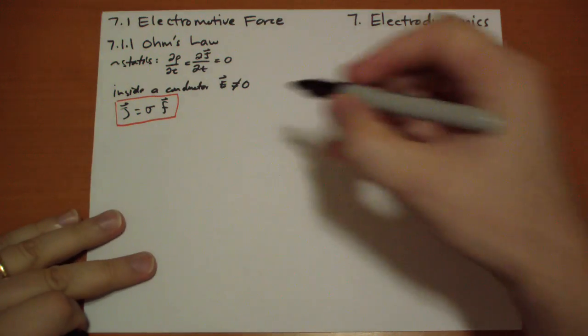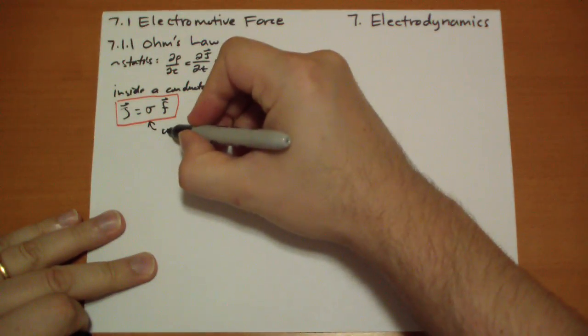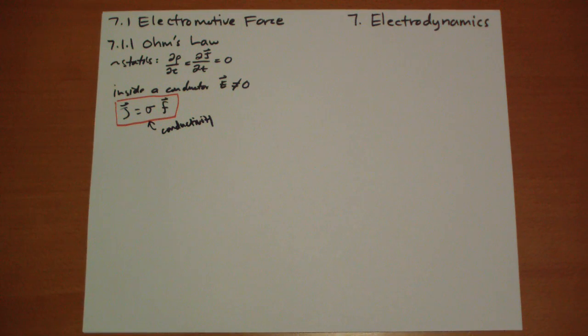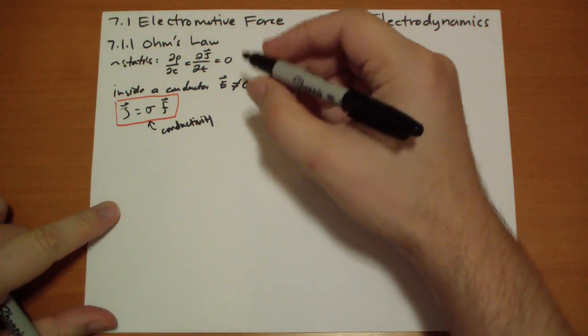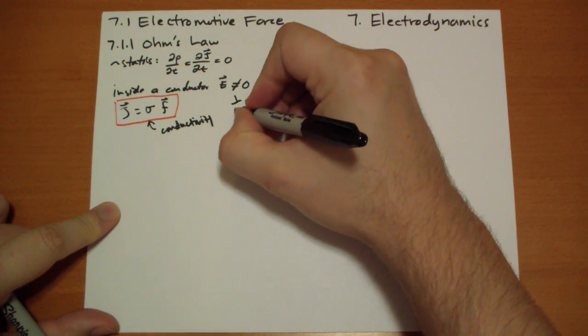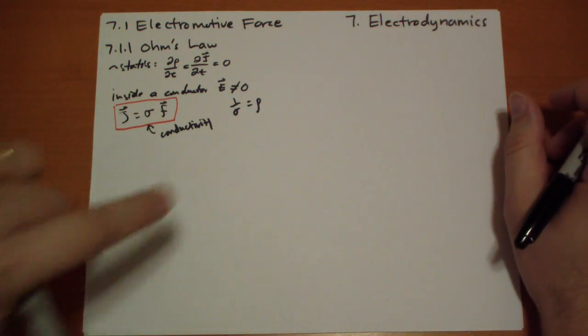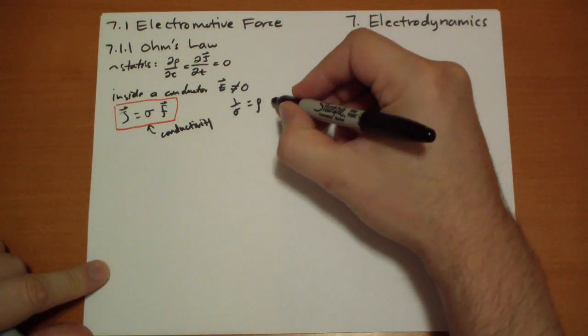This is called the conductivity. It tells you how fast those balls are going to fall in the Pachinko game. The opposite, the inverse of the conductivity, one over sigma, is rho, not to be confused with the charge density. This is the resistivity.